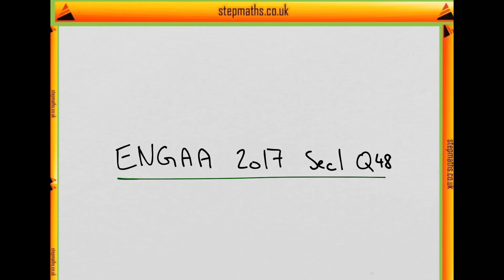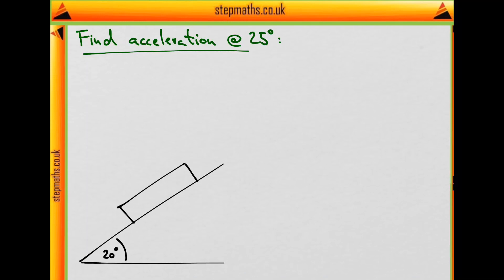In this video, we'll look at question 48 from the 2017 exam. In this question, we have a book on an inclined plane, which at first is at 20 degrees to the horizontal.